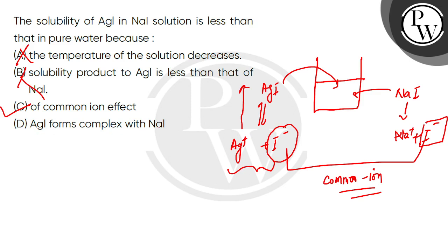And in option D, it says AgI forms complex with NaI, so this option will be wrong. Only option C is the correct answer, rest are incorrect. I hope you understood. Thank you.